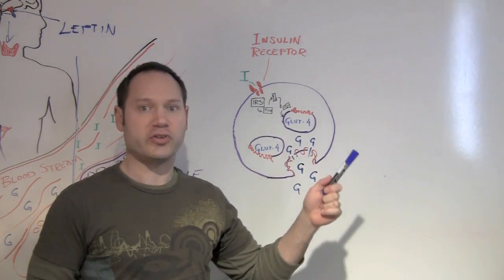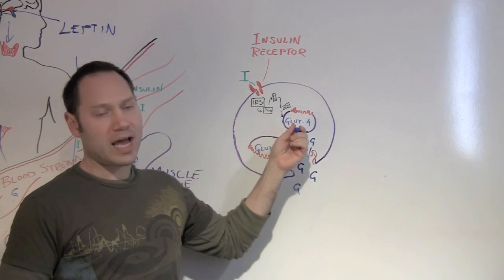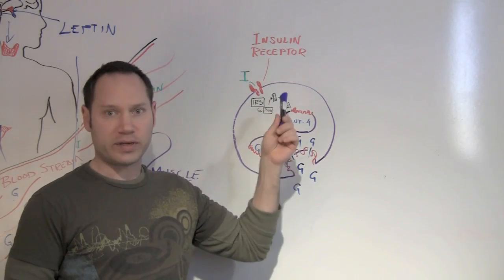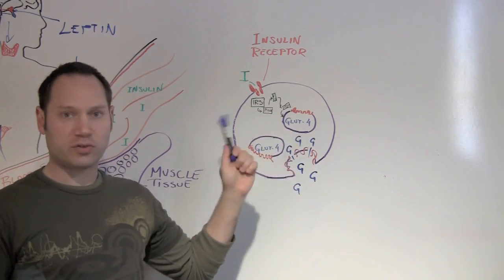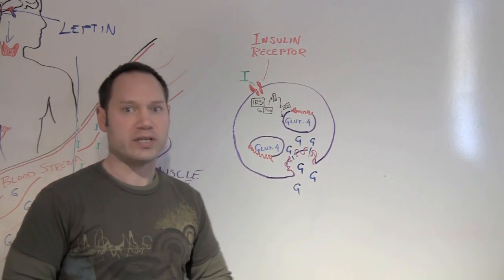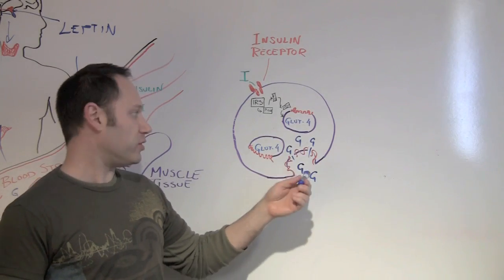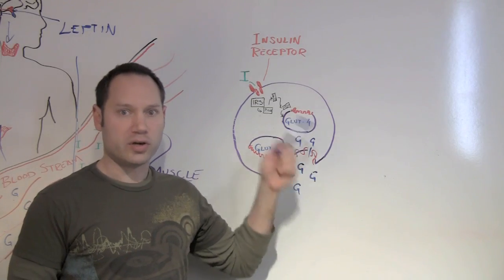Another way to improve this absorption of glucose into the cells is exercise. Exercise is interesting because exercise will directly activate these GLUT4 proteins without the need for insulin. Exercise is extremely important in this process. Appropriate exercise is going to get these GLUT4 proteins to the cell membrane, uptake glucose, and do that without the need for insulin.